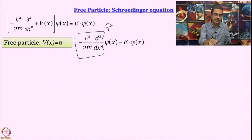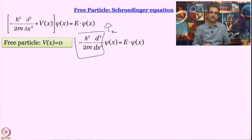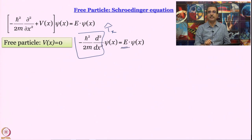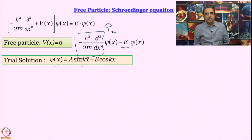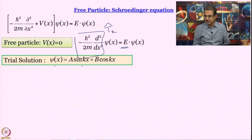The term minus h-bar squared over 2m times d²/dx² is the kinetic energy operator, often called T-hat-x. So E here is going to be only kinetic energy — for a free particle there is no potential energy anyway. The trial solution we can think of is psi(x) = a sin(kx) + b cos(kx). Another kind of trial solution will come later. To check this, all we have to do is differentiate twice — I encourage you to do it once yourself and you will be convinced.